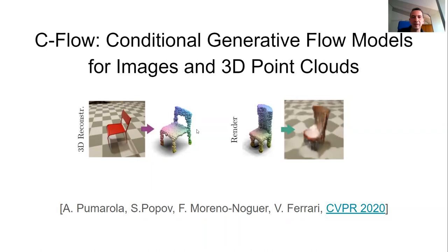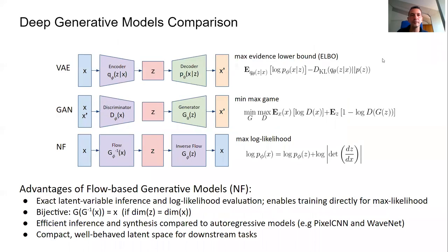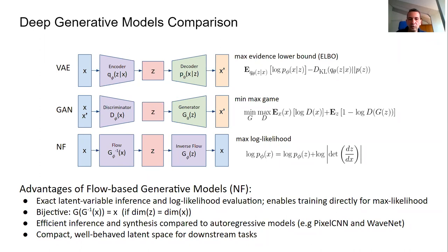Part two covers single object reconstruction using a generative model called normalizing flows. Normalizing flow models have nice properties compared to VAEs, GANs, and autoregressive models: they allow exact latent variable inference — you can get Z given X exactly — and exact log likelihood evaluation. You can train directly for maximum likelihood instead of surrogate objectives, go from X to Z and back with no quality loss if the latent space matches X's dimension, and they allow efficient inference and sampling compared to autoregressive models.